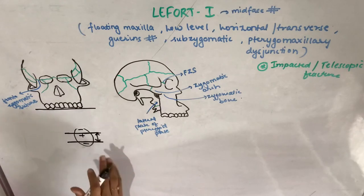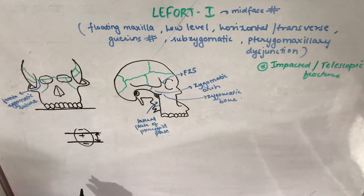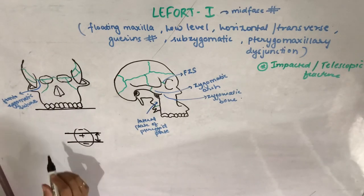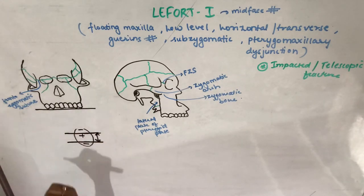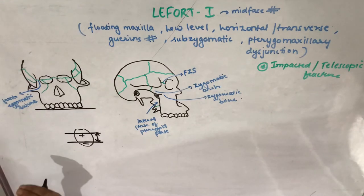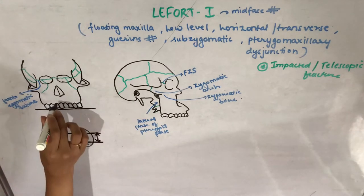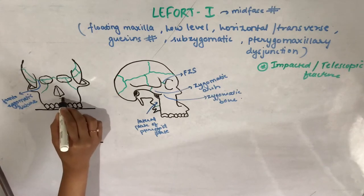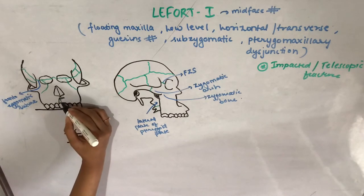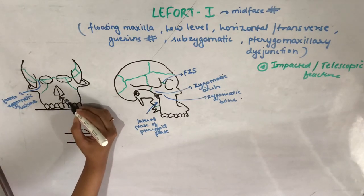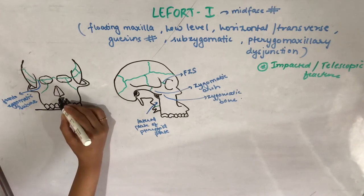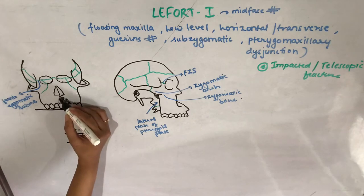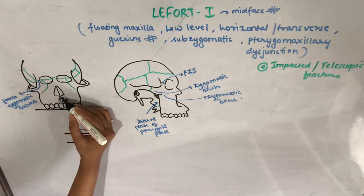The etiology: Le Fort 1 results from the application of horizontal forces applied just above the apices of the maxillary teeth. It is a high velocity force applied in a horizontal direction, directed above the root apices of the maxillary teeth.